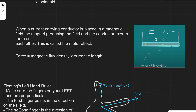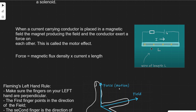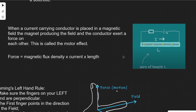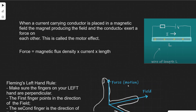So what is actually the motor effect? When a current-carrying conductor is placed in a magnetic field, the magnet producing the field and the conductor exert a force on one another. If a wire is placed in a magnetic field and there is current running through it, the wire will experience a force — it will actually move. The magnitude of that force is given by the equation F = BIL, the famous 'BILL' equation: force equals magnetic flux density times current times length.